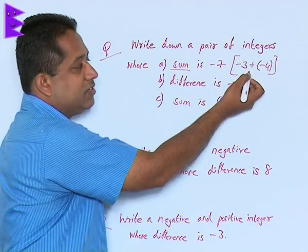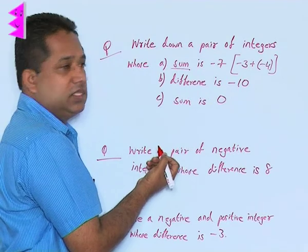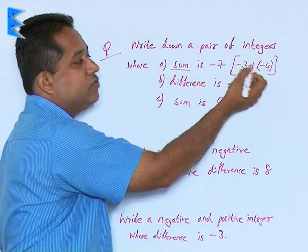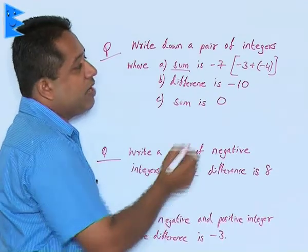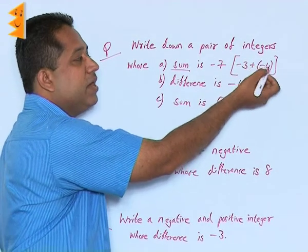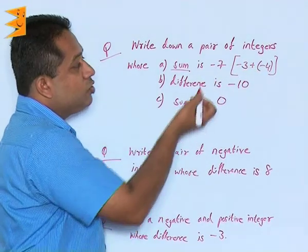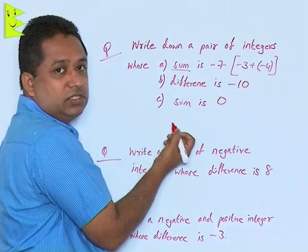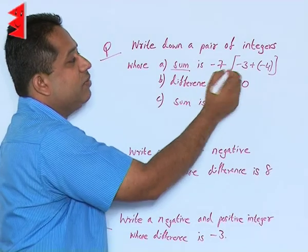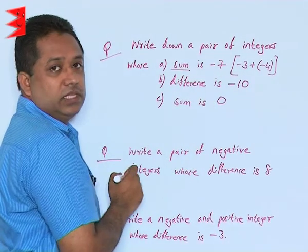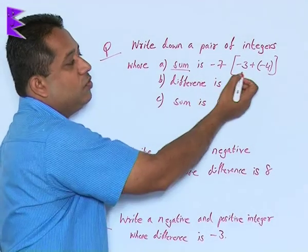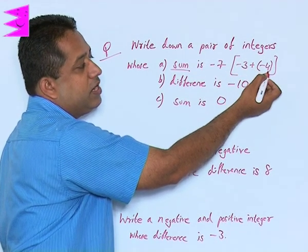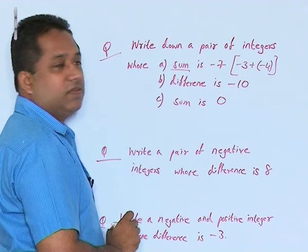This is not the only answer — there are infinitely many possibilities where you could get minus 7. You could have a combination of minus 1 and minus 6, or minus 2 and minus 5. You could also have minus 7 and 0, because 0 itself is an integer, so minus 7 plus 0 gives you minus 7. One example shown here is that minus 3 plus minus 4 equals minus 7.